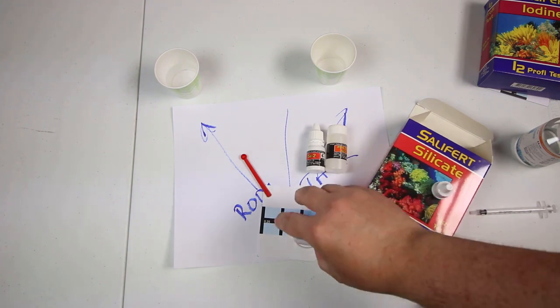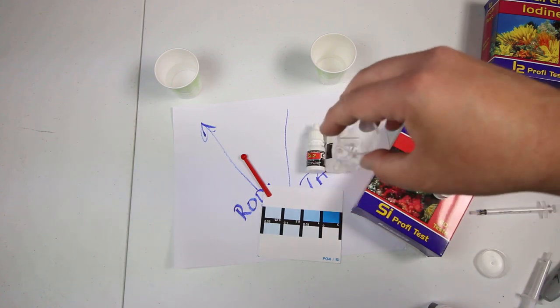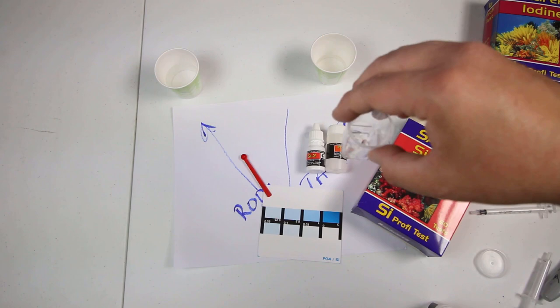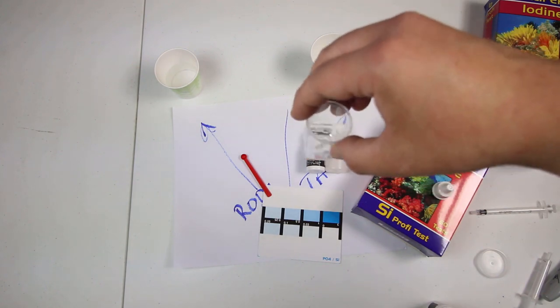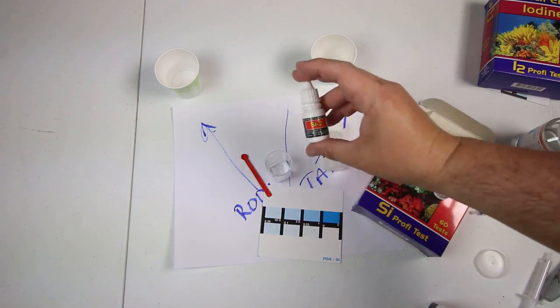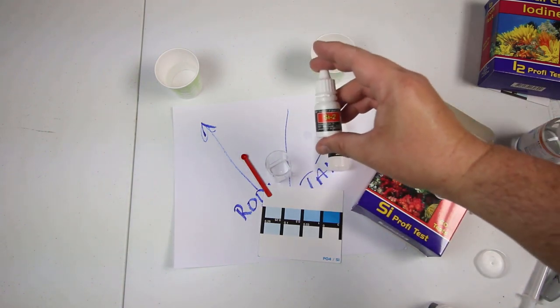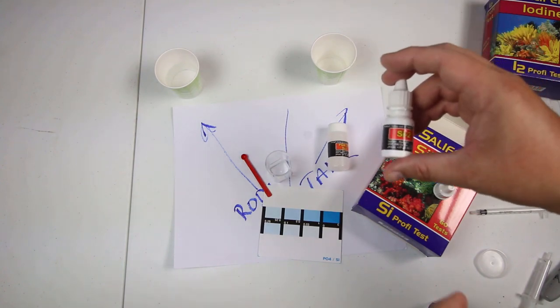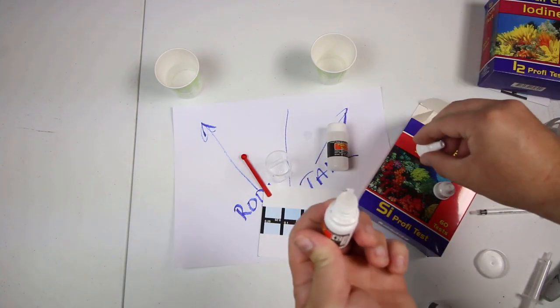We're going to gently swirl this around for ten seconds and then we're going to allow it to stand for five minutes before we move on to SI2. So now that we added that we will go to the SI2 and we're going to add another four drops. Swirl for ten seconds and this time we'll just allow it to stand for one minute instead of five.